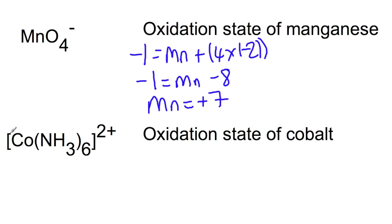Let's have a look now at cobalt in an amine complex. So we have plus two equal to whatever the oxidation state of cobalt is plus six times the oxidation state of the amine ligand. So the amine ligand is neutral. It has an oxidation state, zero.